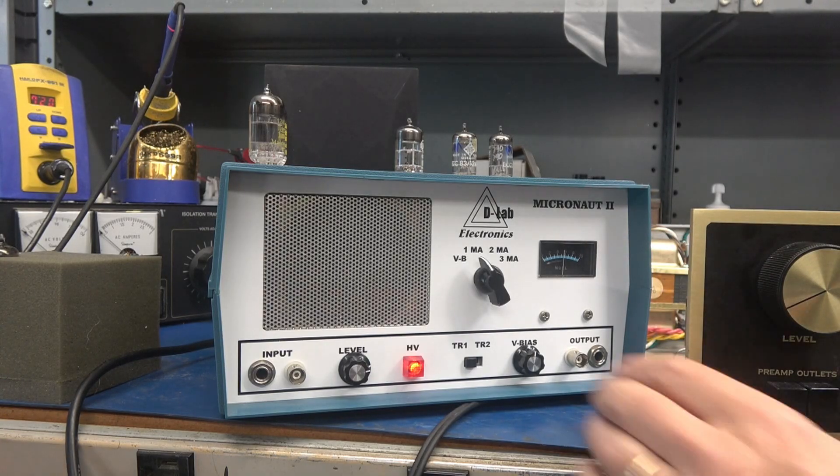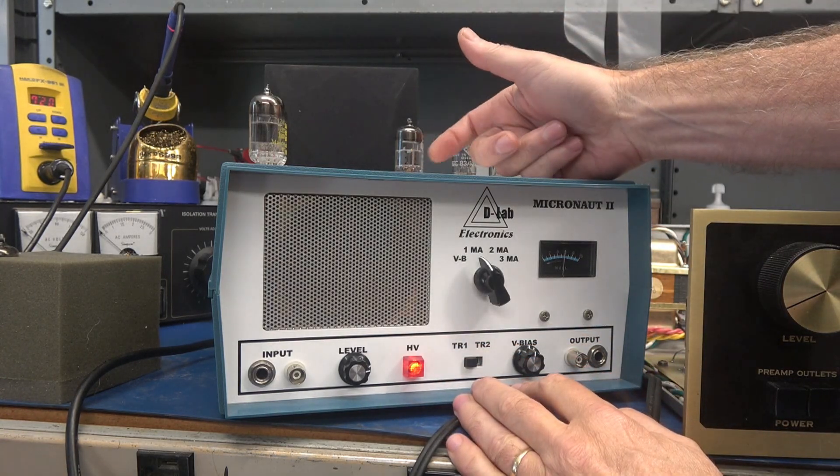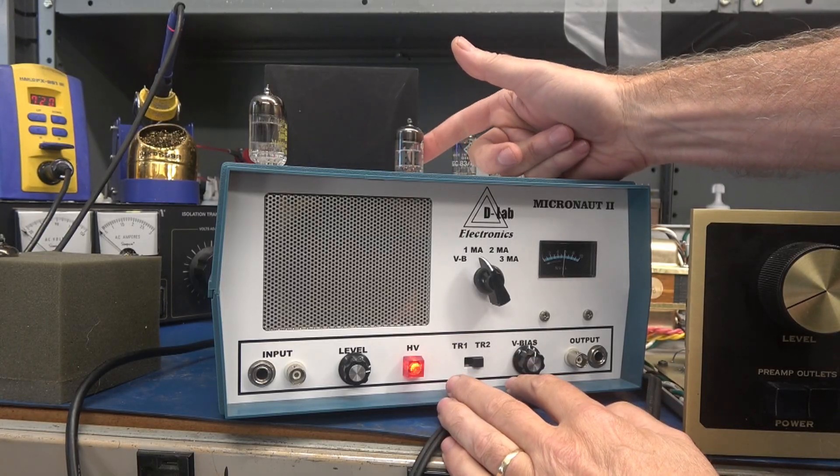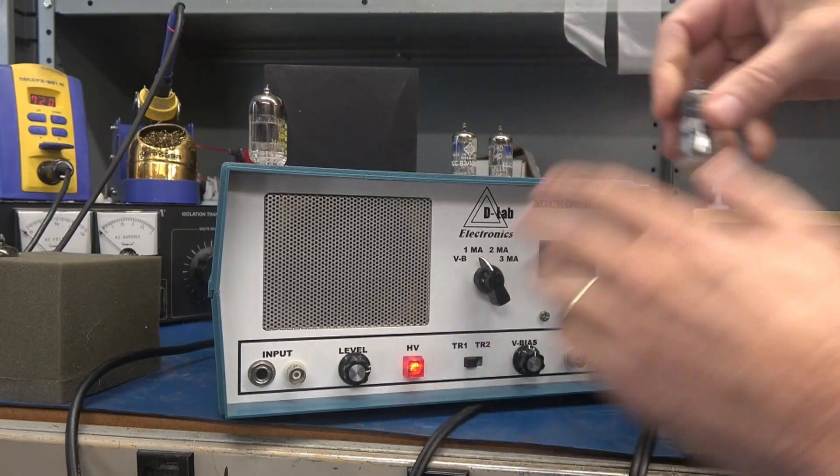See, she's warmed up. This is triode one, triode two. Tap on her. She's nice and quiet. That is a good 12AX7.